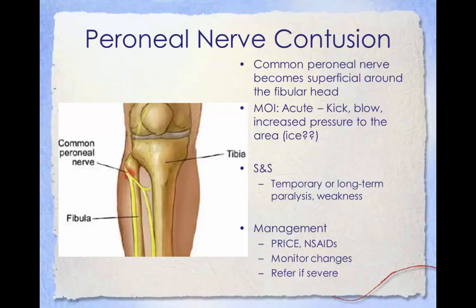The peroneal nerve is found on the outside part of the lower knee and is responsible for transmitting impulses to and from the leg, foot, and toes. When damaged, the muscles innervated by this nerve may become weak and sensation may be lost; a condition called foot drop — the inability to raise the foot upwards — can occur. A peroneal nerve injury is commonly caused by trauma such as a kick, blow, or increased pressure to the area, a broken leg bone, knee injury, surgery to the leg or knee, or ankle injuries. Even placing ice on an athlete's knee can irritate this nerve because it is so superficial. Symptoms include numbness or tingling in the lower leg, pain in the foot or shin, foot weakness, and a pins and needles sensation. Management includes PRICE, NSAIDs, and monitoring the athlete for changes; if symptoms do not improve or remain severe, refer the athlete.